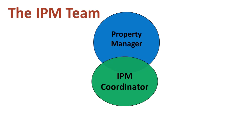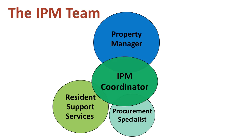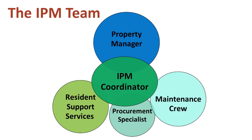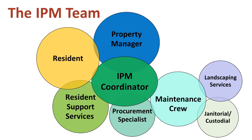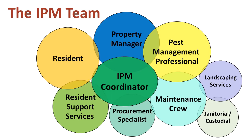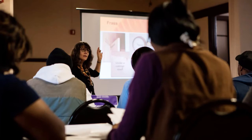Property managers are responsible for time and resource allocation and often set the tone for resident involvement. The procurement specialist reviews qualifications of pest management professionals and contracts for pest management services. Resident support services provide education and assistance for residents. The maintenance crew addresses moisture issues and makes repairs that block pest entry points. Janitorial and custodial services clean common areas. Residents must clean regularly and report maintenance issues and pest problems. Landscape services choose pest-resistant plants and keep plants away from the building, minimizing rat habitat. The pest management professional, or PMP, follows the contract, conducts inspections, monitors pest populations, and applies pesticides that pose the least risk to human health and the environment.